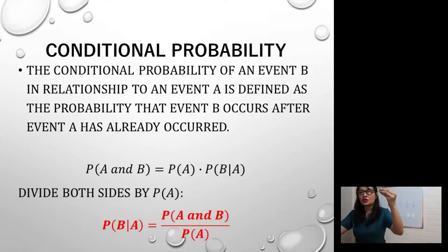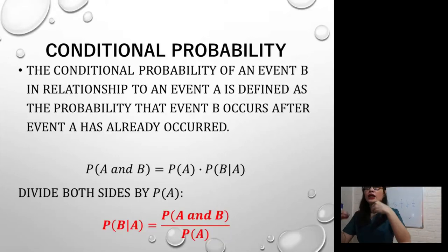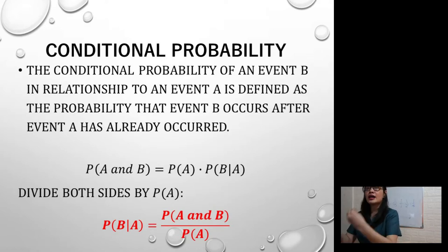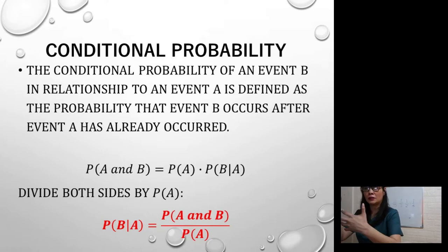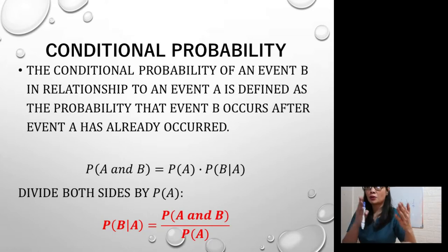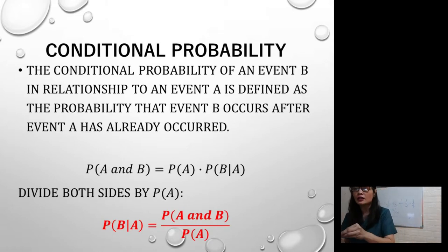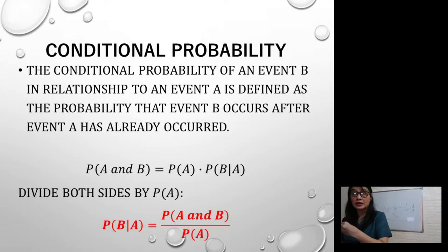Conditional probability. The conditional probability of an event B in relationship to an event A is defined as the probability that event B occurs after event A has already occurred. The probability of A and B is equal to the probability of A multiplied by the probability of B given A.